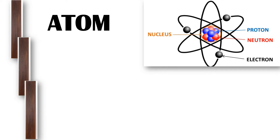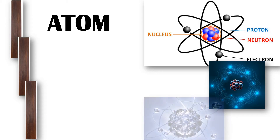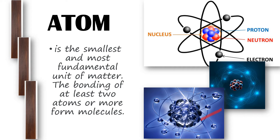First, we have the atom. An atom has protons, neutrons, a nucleus, and electrons. An atom is considered as the smallest and most fundamental unit of matter. The bonding of at least two atoms or more forms a molecule.